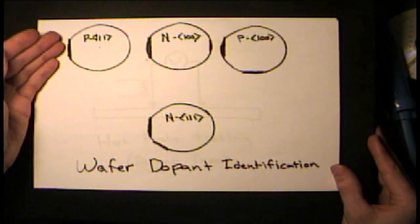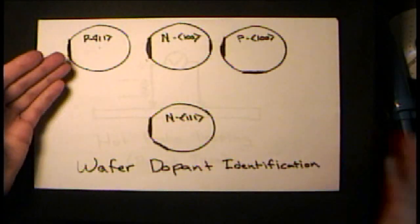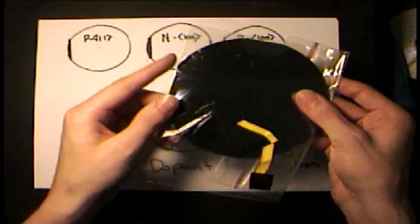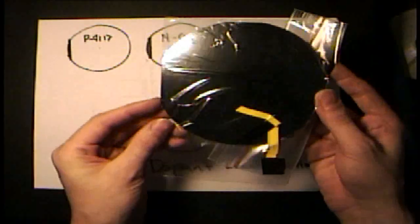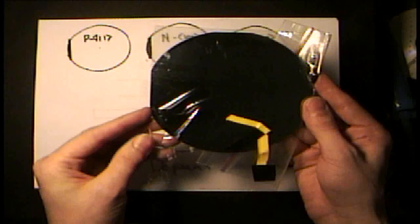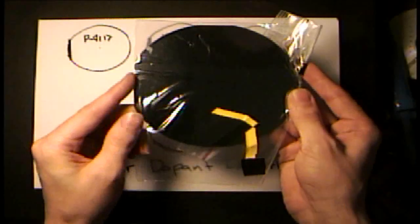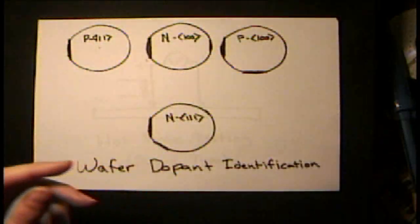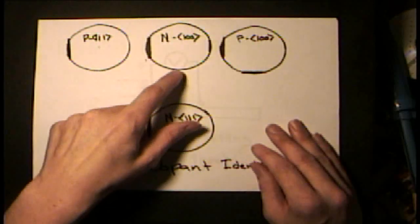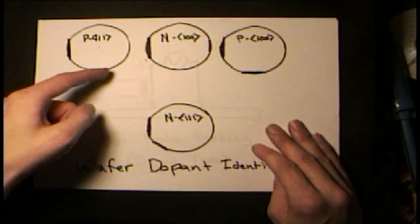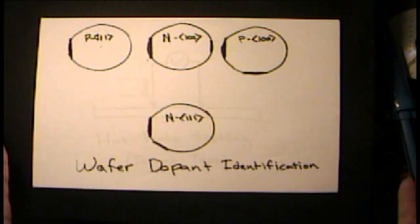You can look for the wafer flats. On wafers, they grind the edge of the wafers on many of them. Many of the older ones, like the 4-inch wafers, will have a primary flat and a secondary flat on them that's ground on the side, and that indicates what type of wafer they are.